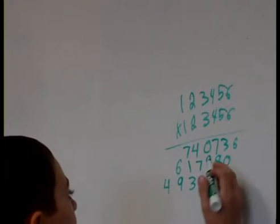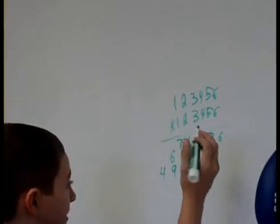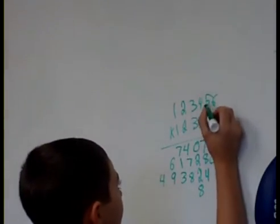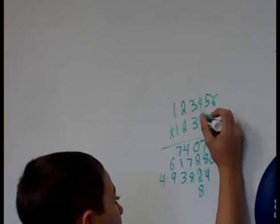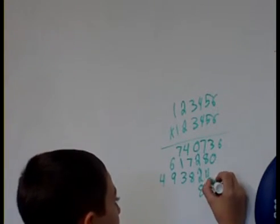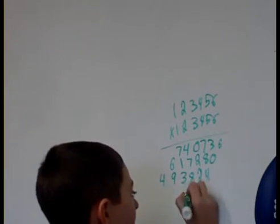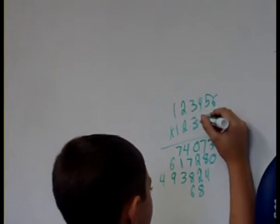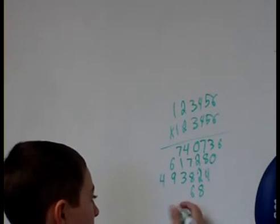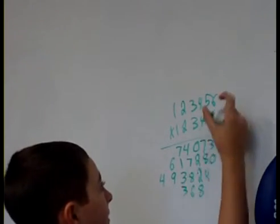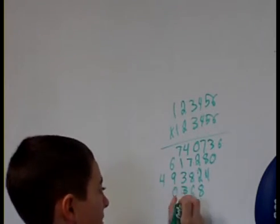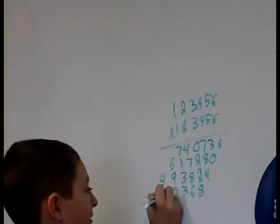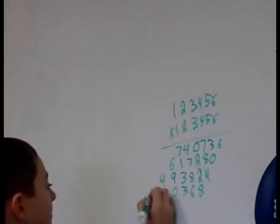And, 6 times 3 is 18. So, 3 times 5, which is 15, plus the 1, which is 16. And then, 3 times 4, which is 12, plus the 1 is 13. 3 times 3 is 9, plus the 1, which is 10. And then, 3 times 2 is 6, plus the 1 is 7. And then, 3 times 1 is 3.